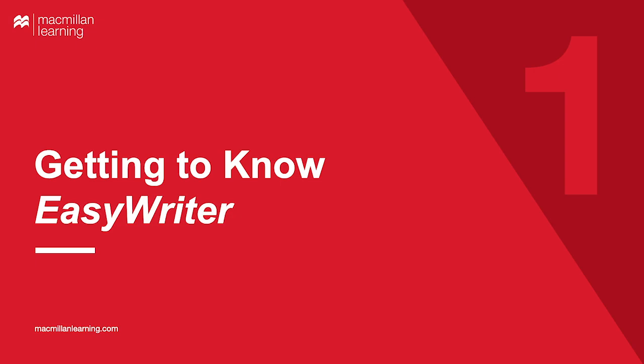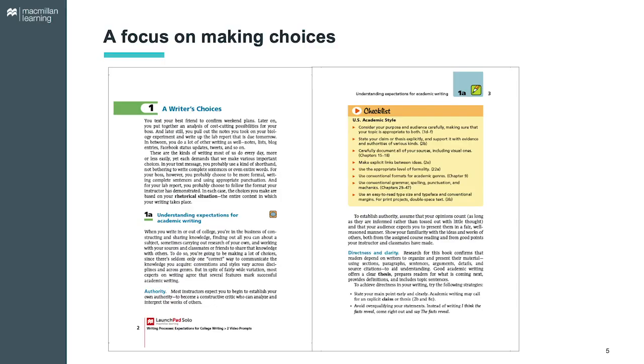Let me break this presentation into two parts. To start, let's take a brief walk through the new edition of EasyWriter, 7th edition, and then I can share some more ideas for teaching with it. First, there's a focus on making choices, which is emphasized right from the very first chapter. If you're teaching with the exercises version of EasyWriter, the prompts in chapter one can help students think through ideas about making choices as a writer.